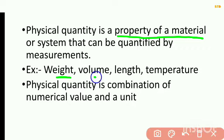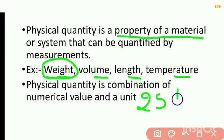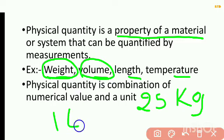For example, weight, volume, length, temperature, etc. Suppose if you want to mention weight, we can measure weight in terms of 25 kg and volume in terms of 1 liter. So physical quantity is a combination of numerical value.